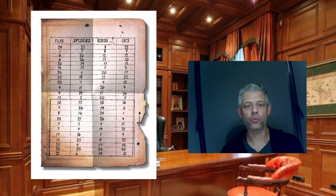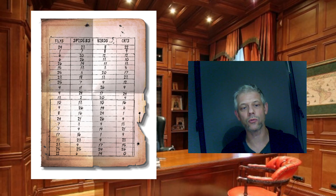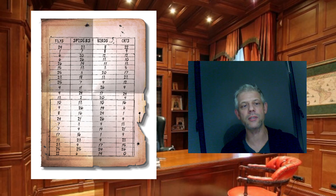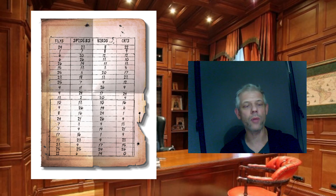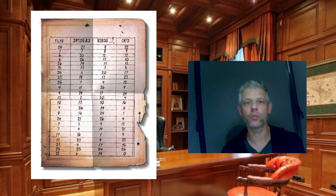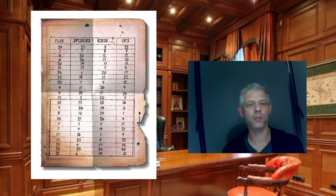Les joueurs s'en sont aperçus d'eux-mêmes sans faire de dépense. Ils se sont doutés qu'il y avait quelque chose. En tout cas ils ont remarqué que ça allait de 0 à 26, et donc ça leur a mis la puce à l'oreille. Comme l'un des personnages dispose de cryptographie, j'ai confirmé cette intuition et le joueur a voulu s'atteler à déchiffrer cela.